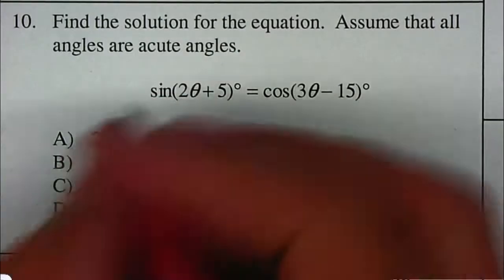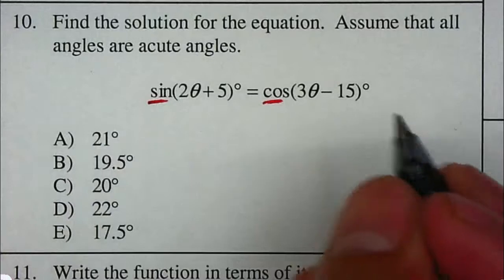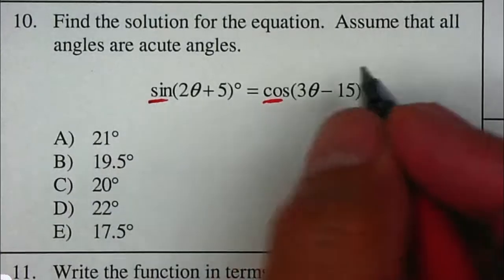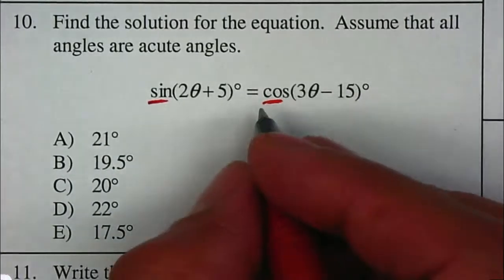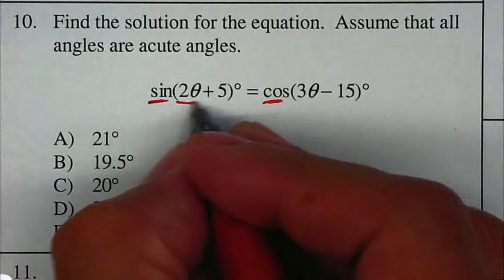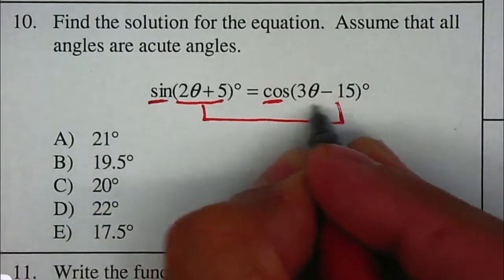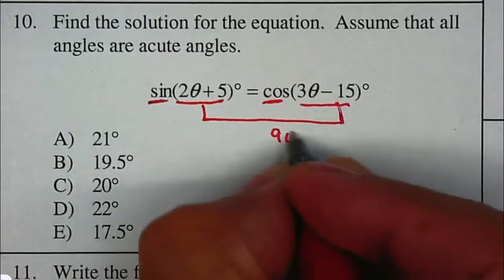Now since sine and cosine are co-functions of each other, therefore I know that those two angles added together should be equal to 90 degrees.